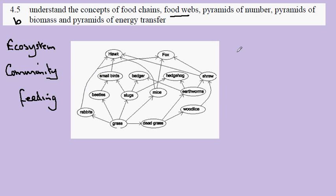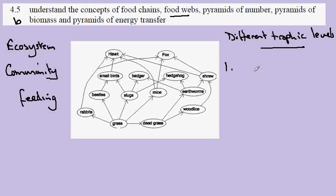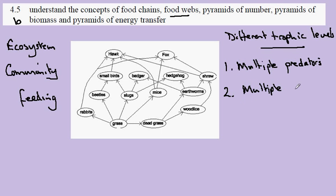The advantage of the food web is that it allows us to show organisms feeding at different trophic levels. Feeding at different trophic levels has a number of consequences. First of all, organisms can have multiple predators. An organism may also be feeding on multiple prey. And we'll see that this results in the food chains becoming linked.